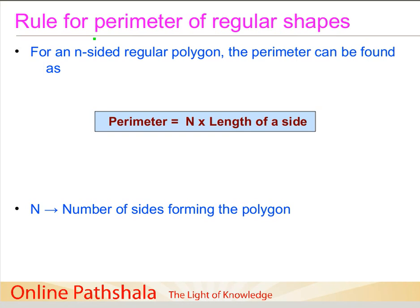For an n-sided regular polygon—it could be any number of sides, could be 8 sides, 9 sides, 10 sides, whatever regular polygon you have—the perimeter can be found as n into length of the side, where n is nothing but the number of sides which form the polygon. So this is the rule that you can apply for regular shapes straightaway to find out the perimeter of that polygon.